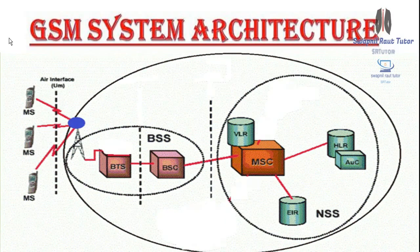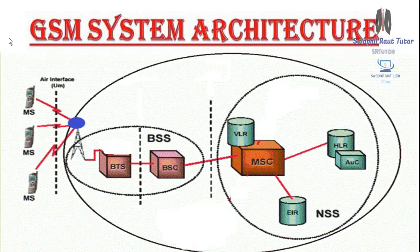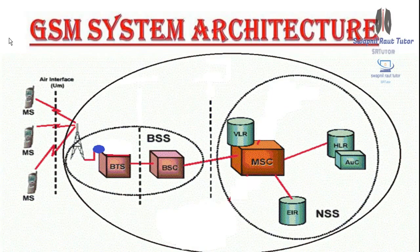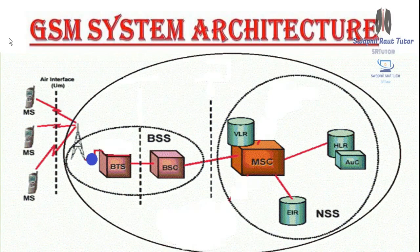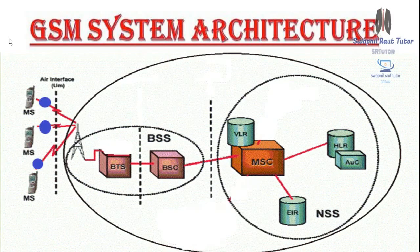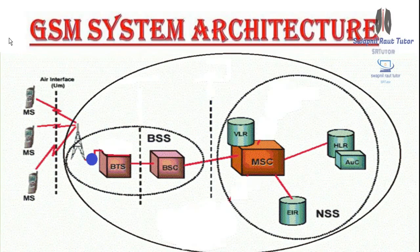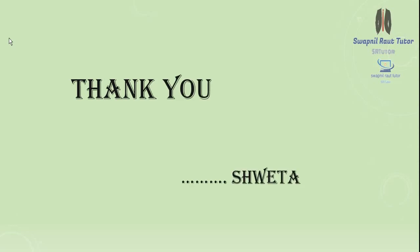This is the GSM system architecture. In this diagram, the MS sends a signal to the nearest BTS, which forwards it to the BSC. After some processing, when the BSC gets a channel or time slot, it sends signals to the MSC. All the authentication processes are done, and then the MSC sends the signal to other networks. Thank you.